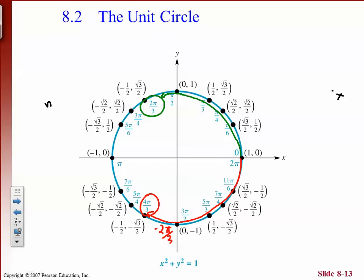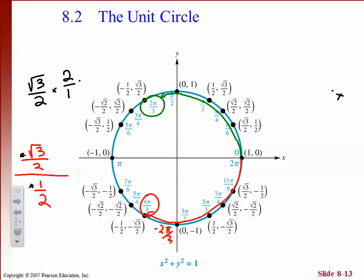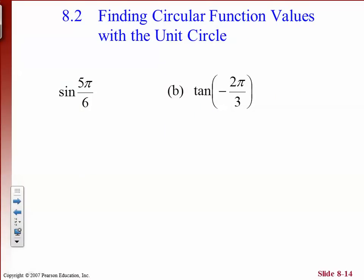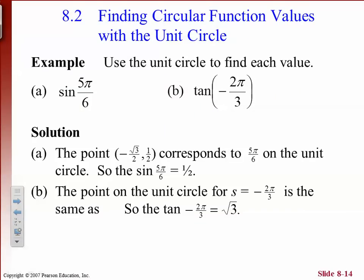Tangent is sine over cosine — the y value divided by the x value at that point. At 4 pi over 3 we have y equals negative square root of 3 over 2, divided by x equals negative 1/2. The negatives cancel, and multiplying by the reciprocal gives square root of 3 over 2 times 2 over 1, which equals square root of 3. So the tangent of negative 2 pi over 3 is the square root of 3.